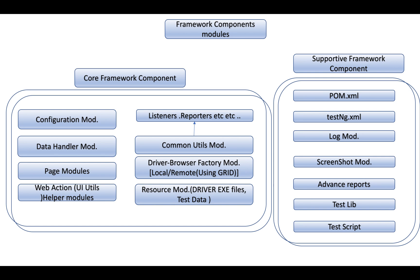On a high level, this will be the structure, though there might be a couple of alterations during the demo. The first core component is the Configuration Module, which handles application configuration — things like application properties, which browser to use, the URL of the application. We'll also be building the framework to support both sequential execution and parallel execution, and we'll try to cover the grid part for remote execution as well.